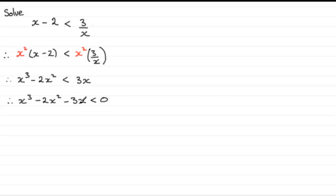And we can factorize this if we pull out x as a common factor. We've got x bracket x squared minus 2x minus 3 and that's less than 0. And if we factorize the quadratic factor here, it factorizes to x minus 3 and x plus 1 and so that'd be less than 0.